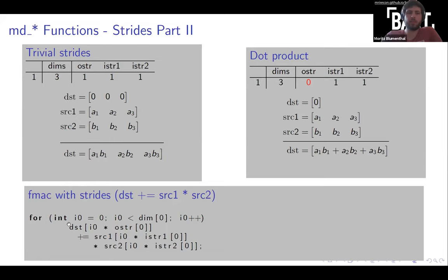Now we can use strides to manipulate how this loop works. If we set the output stride to zero, the output index will always be zero. We will still move forward in the source memories to the next values, but always add the result to the same destination element at index zero. So, starting from zero initialization, in the first iteration we add A1 times B1, in the second A2 times B2, in the third A3 times B3. In this way we have used the FMAC function to compute a dot product.